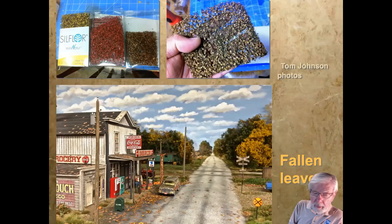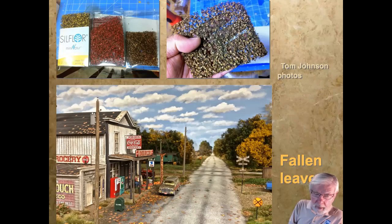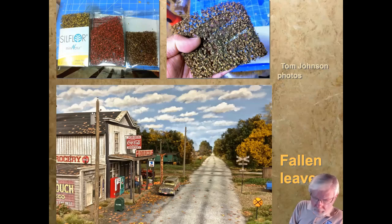Creative Tom also noticed that Silverware makes a leaf material you're supposed to stretch out and use as ground cover. But Tom decided to rub off the leaves embedded in the material — you can get this from Scenic Express — and then poured the leaves down on the roof and into the gutters of the road. Absolutely stunning effect.